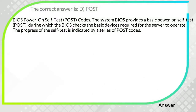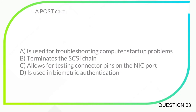BIOS power-on self-test, POST, codes. The system BIOS provides a basic power-on self-test, POST, during which the BIOS checks the basic devices required for the server to operate. The progress of the self-test is indicated by a series of POST codes. A POST card: A. Is used for troubleshooting computer startup problems. B. Terminates the SCSI chain. C. Allows for testing connector pins on the NIC port.